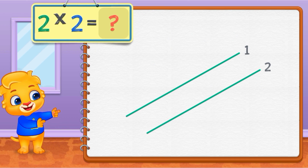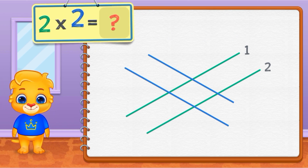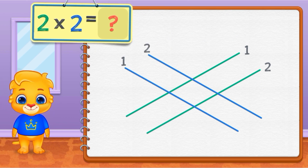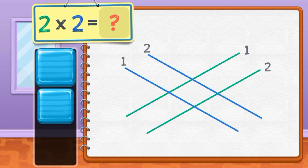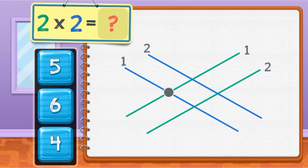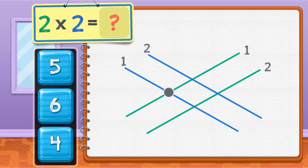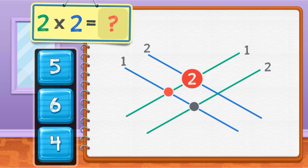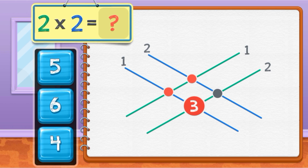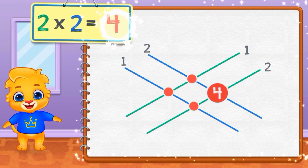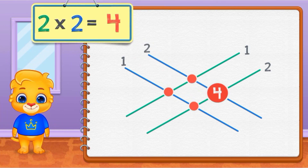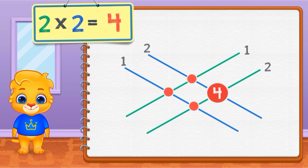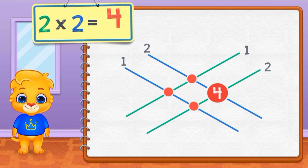2 times 2 equals 1, 2, 3, 4. 2 times 2 equals 4.